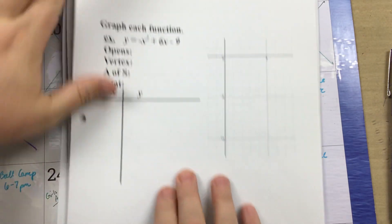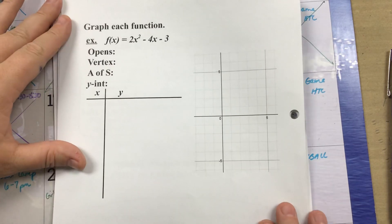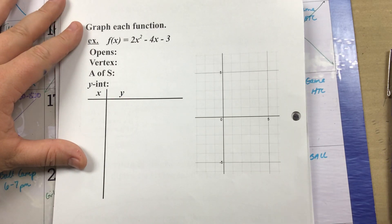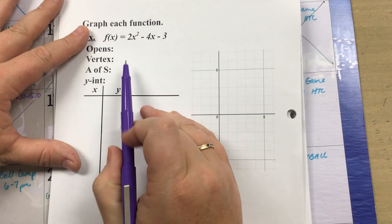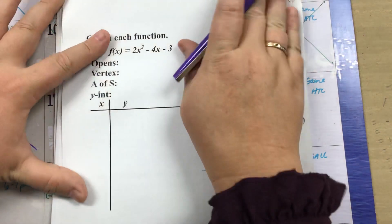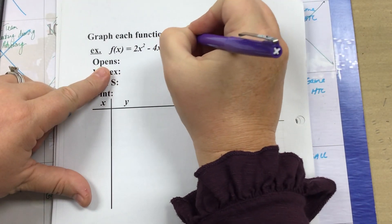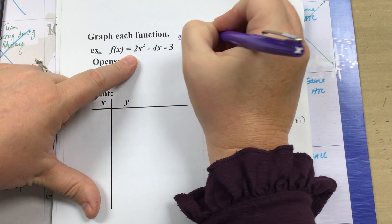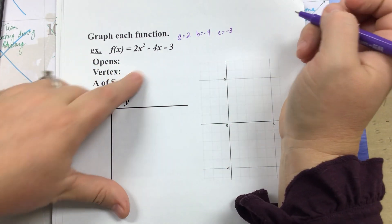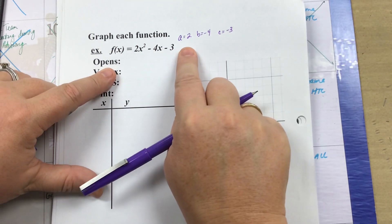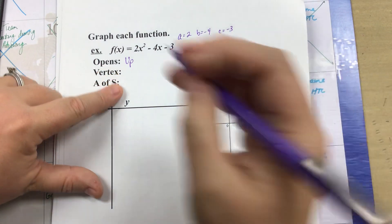We have two examples to go over. For the first one, the function is f of x equals 2x squared minus 4x minus 3. My a value is 2, my b value is negative 4, and my c value is negative 3. Since my a value is positive, this one is going to open up — it's going to look like a U when we're finished.